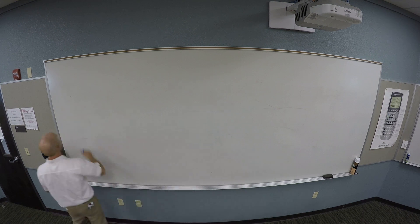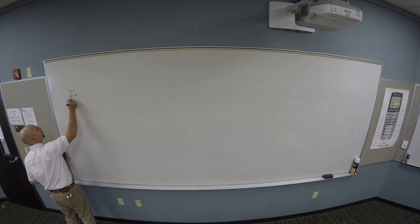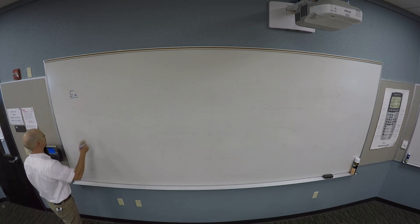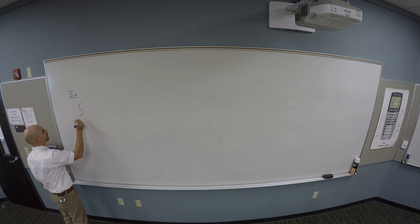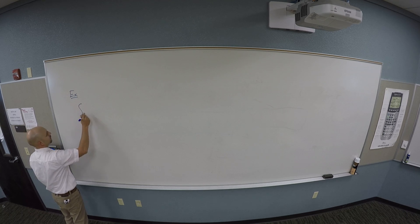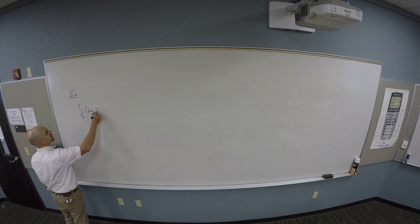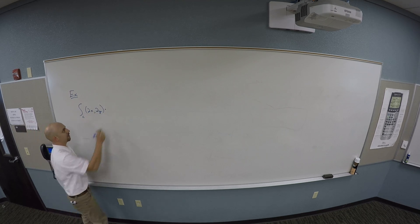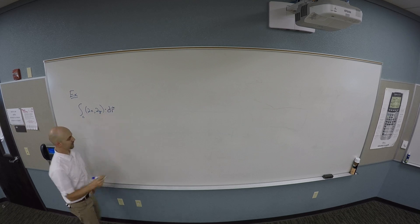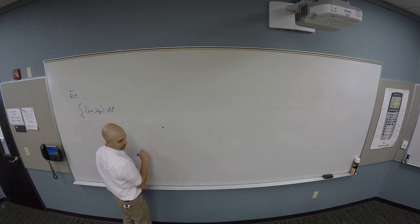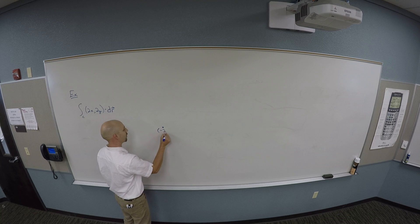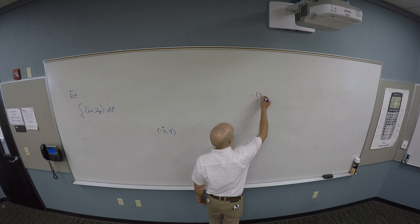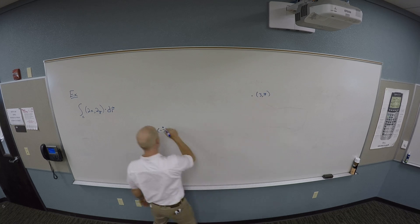I would like to do an example of the fundamental theorem of line integrals. I want to compute the line integral over C of the vector field (2X, 2Y) dotted with dR, where C is the path that goes from (-2, 4) to (2, 3, 7).